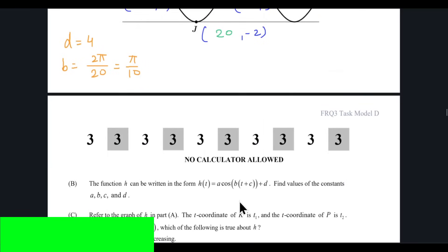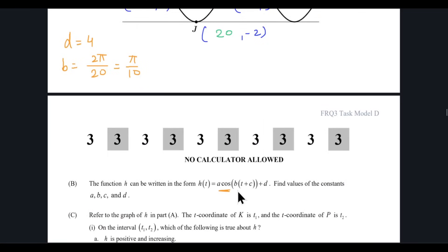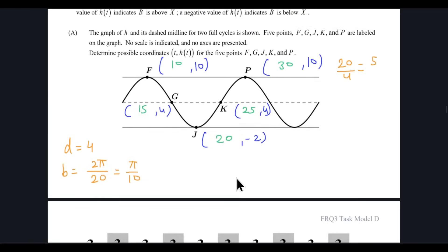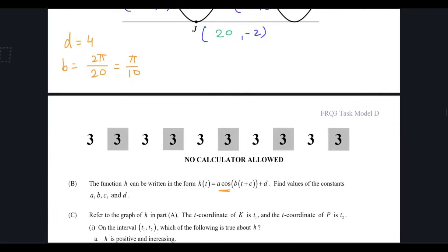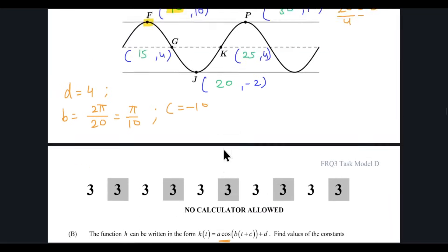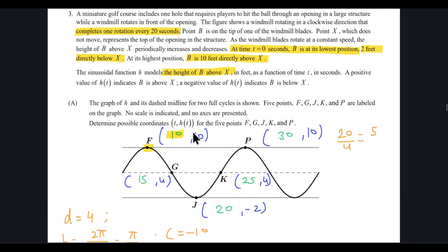Now, this is a cosine function. It's important to see what function they need. It's cosine. And cosine starts from the maximum value. Here we can see this is the maximum point, of course, and it is also going downwards. So it mimics the parent cosine function. So it has been displaced by 10 units, I think, to the right. So I will say C is negative 10.